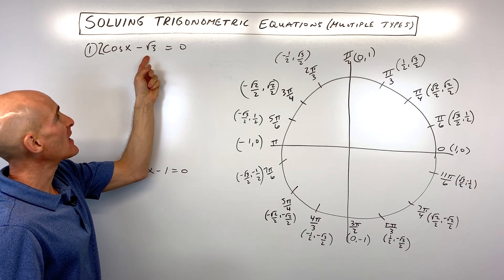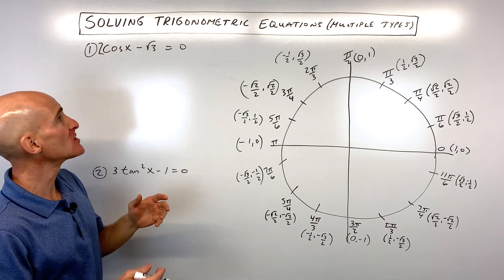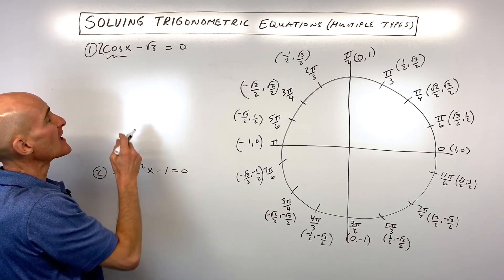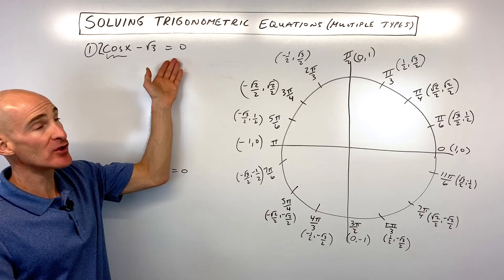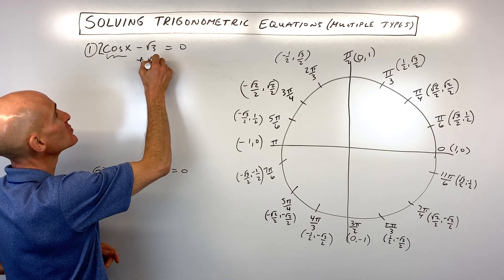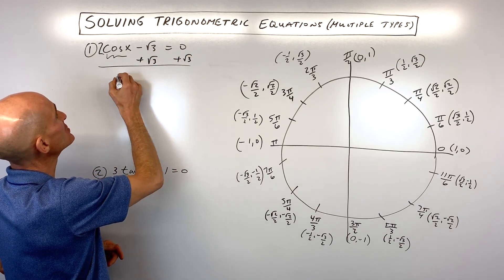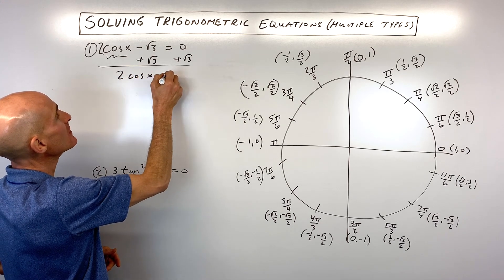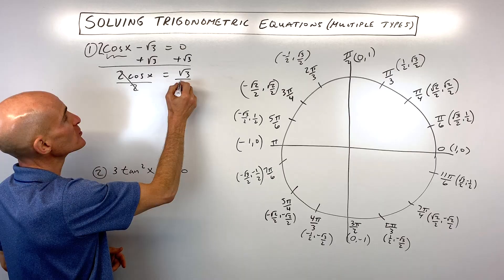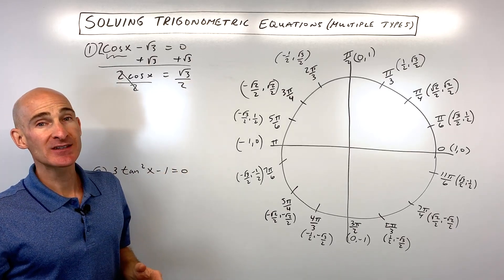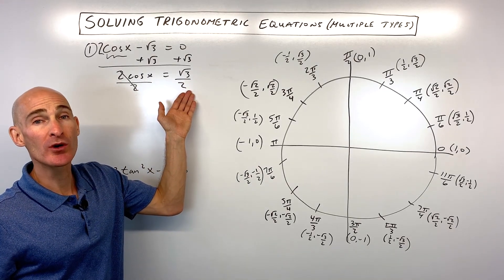The first one is 2cos(x) - √3 = 0. When you solve these equations, you want to focus on getting that trig function by itself on one side of the equal sign. Let's go ahead and do that by adding √3 to both sides, just like solving an algebra equation. Then we divide both sides by 2 to get cosine by itself. So now we're asking ourselves: where is cosine equal to √3/2?